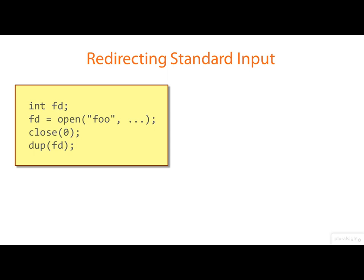Now we can be absolutely certain that at that point in time, descriptor zero is the lowest available descriptor because we've just closed it. So fd will get duplicated onto the standard input, so the standard input is now connected to the file foo.